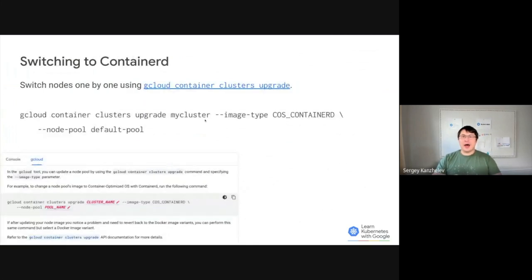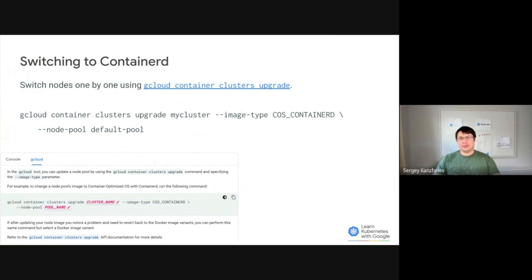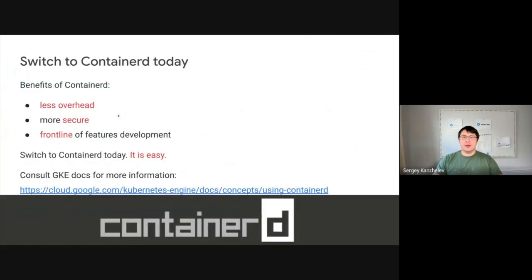Now you know the container runtime, have reviewed potential problems with the migration, and are ready to switch to Containerd. It is very easy with GKE. Just use the gcloud container clusters update command to recreate the node pool with a new node image type. This command will recreate nodes one by one while rescheduling the workload. Note that you can roll back just as easily. And once you start getting the benefits of this migration, you can run your application with less infrastructure overhead, more securely with fewer components involved, and be on the front line of new Kubernetes feature development.